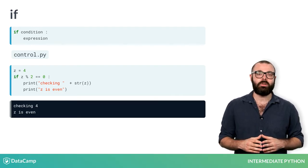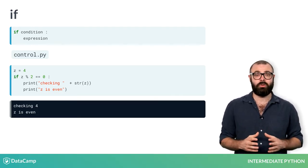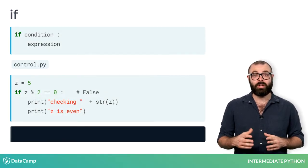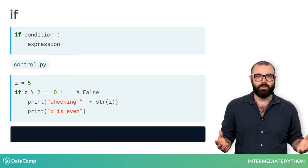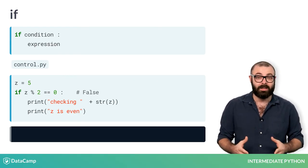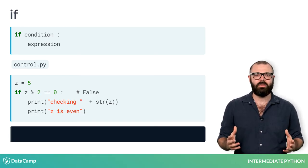If the condition does not pass, the expression is not executed. You can see this if we change z to be 5 and rerun the code. There's no output. Suppose now that you want to print out z is odd in this case. How do you do this?